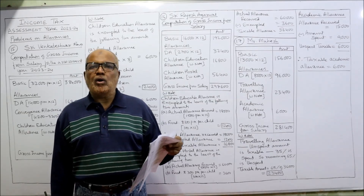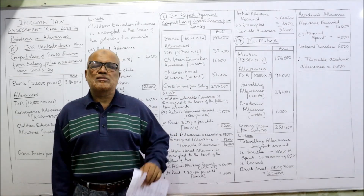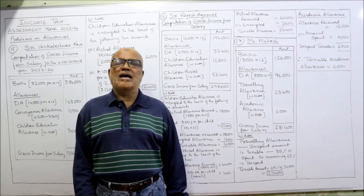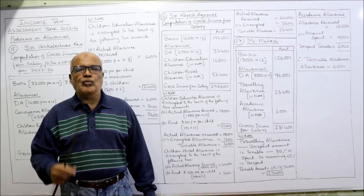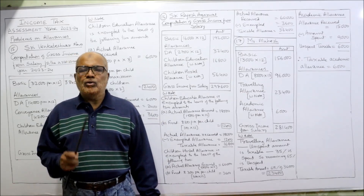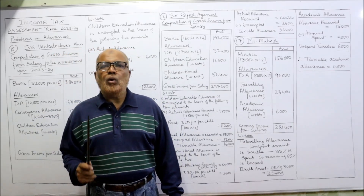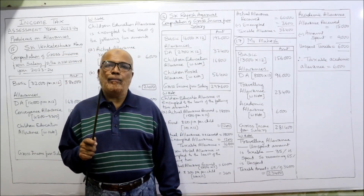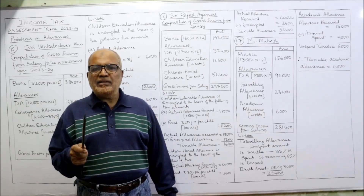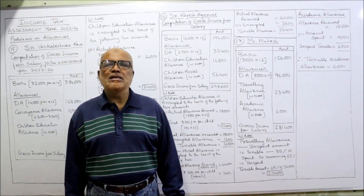A new allowance called hostel allowance has come. According to income tax provisions, the hostel allowance given by the employer to the employee is exempt to the least of the following two: actual allowance received — 5,000 per month, so 5,000 into 12 equals 60,000 — or rupees 300 per month per child for a maximum of two children, meaning 300 into 12 equals 3,600 per annum per child.